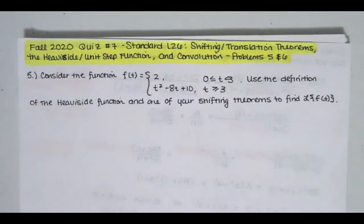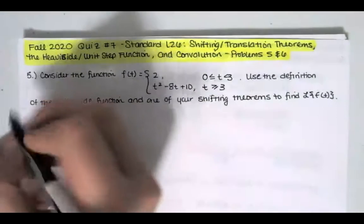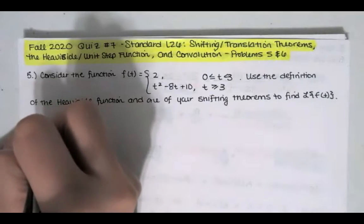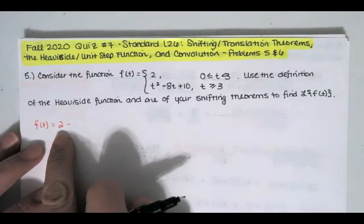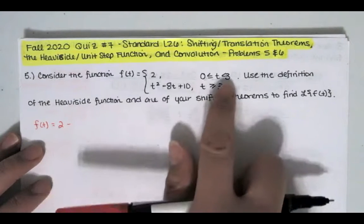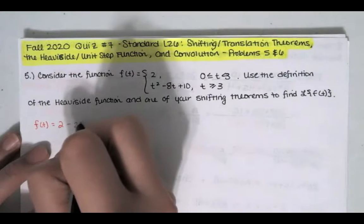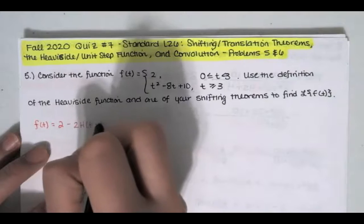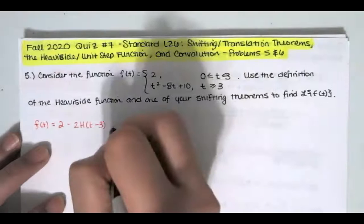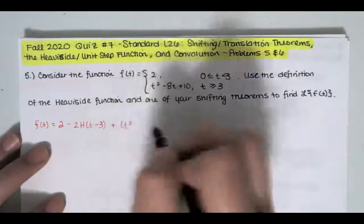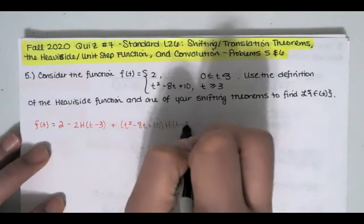f of t starts with the function 2, so you just write that down, and then you turn off the function y equals 2 at t equals 3. In order to turn this function off at t equals 3, you take 2 and multiply by the Heaviside function at t minus 3. Then at t equals 3, we want to turn the polynomial function on, so we add that polynomial times the Heaviside function at t minus 3.